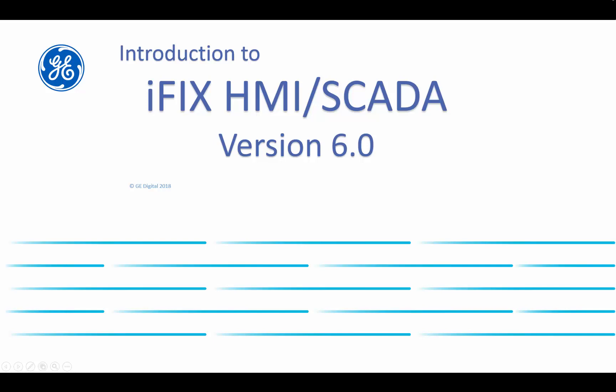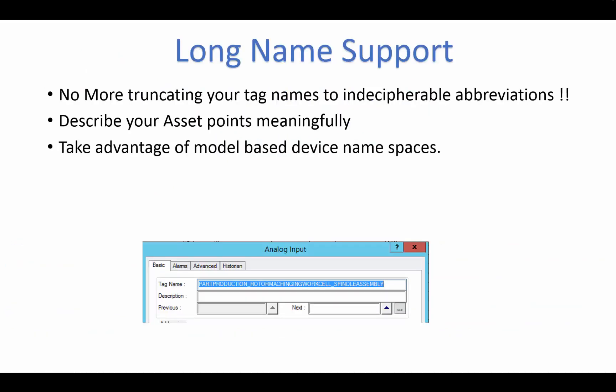The first feature we'll highlight is the long name support added to iFix 6.0. No more truncation of your tag names to 30 characters. We now support 256 character tag names, allowing you to more meaningfully describe your assets and take advantage especially of today's more model-based devices.